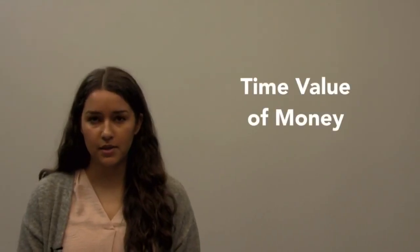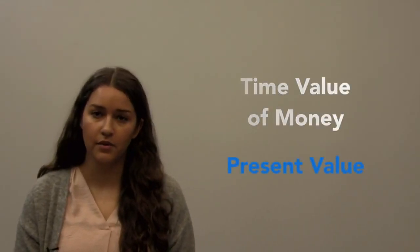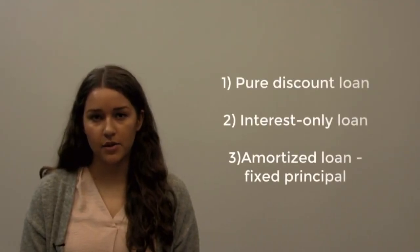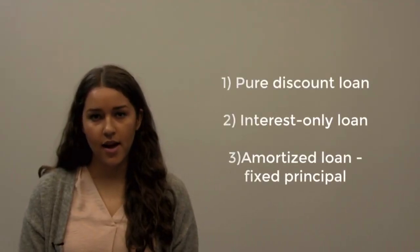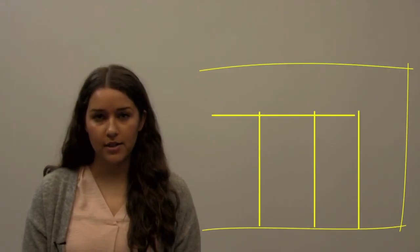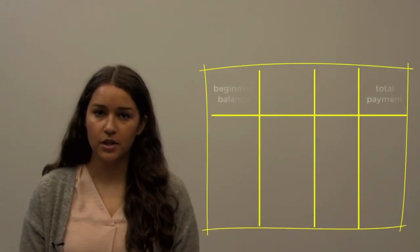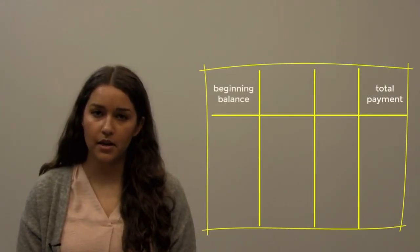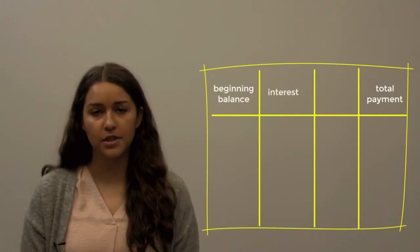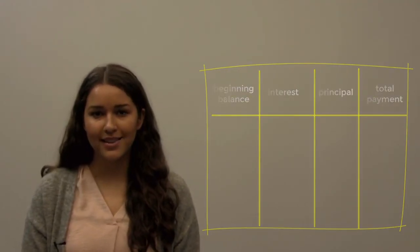Let's recap what we learned through this lesson. We learned the importance of the time value of money when determining the present value of our loan that we must pay off in the future. We also learned about the different types of loans available to borrowers. And finally, we talked about amortizing loans and created our own amortization schedule to determine the portion of our monthly payment that goes towards interest and the portion that pays down the principal. Thanks for watching and we'll see you next time.